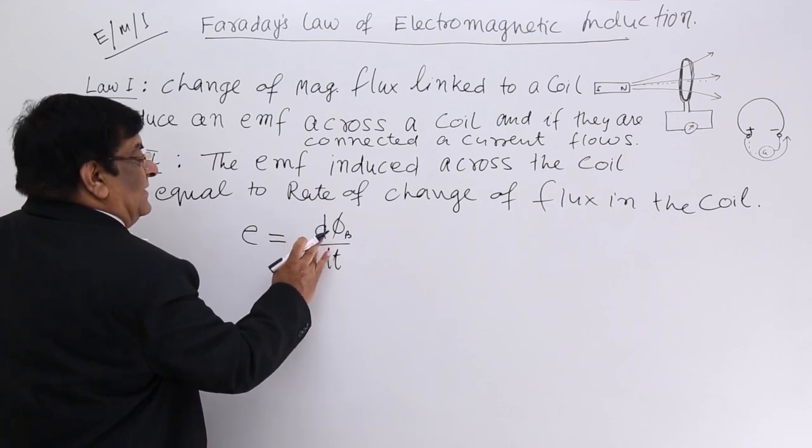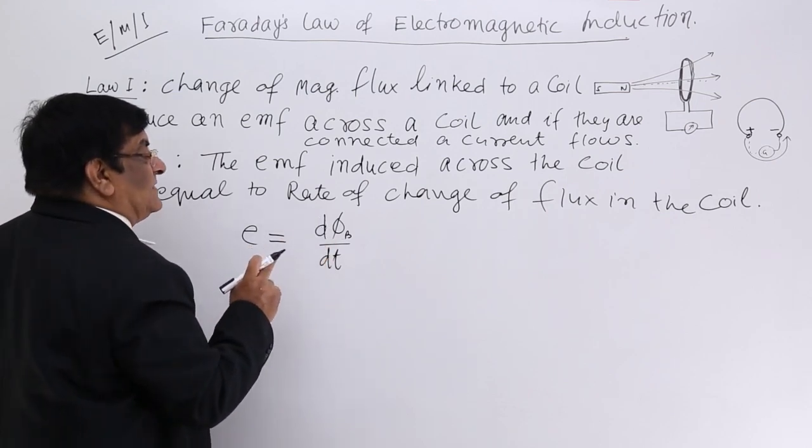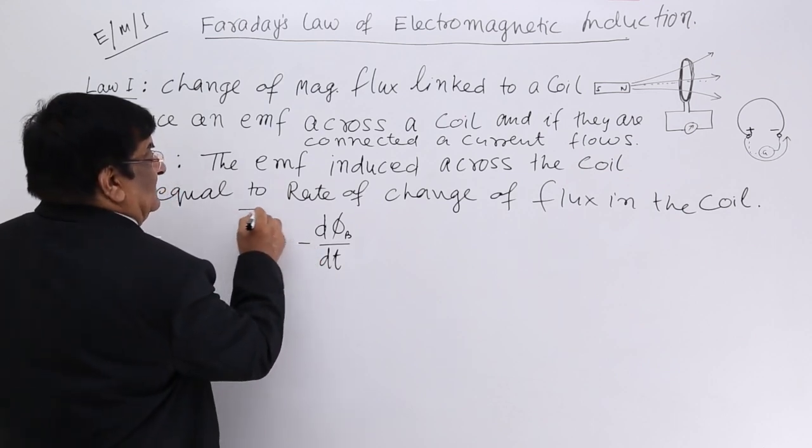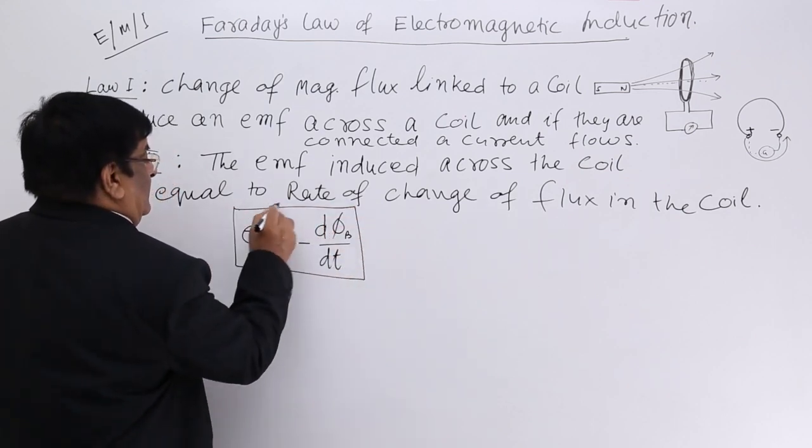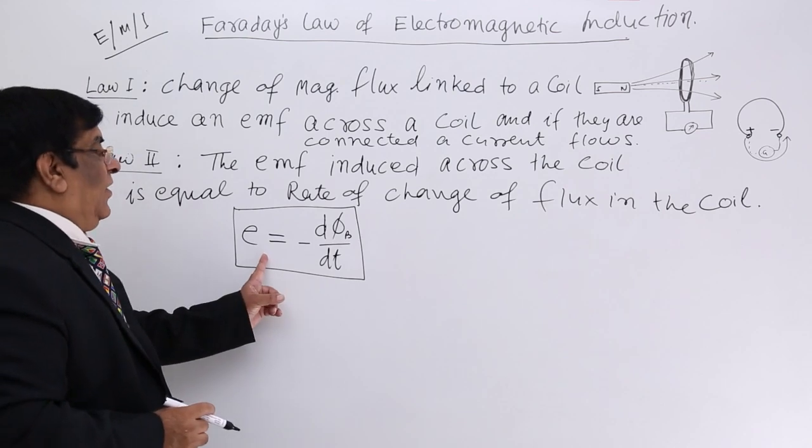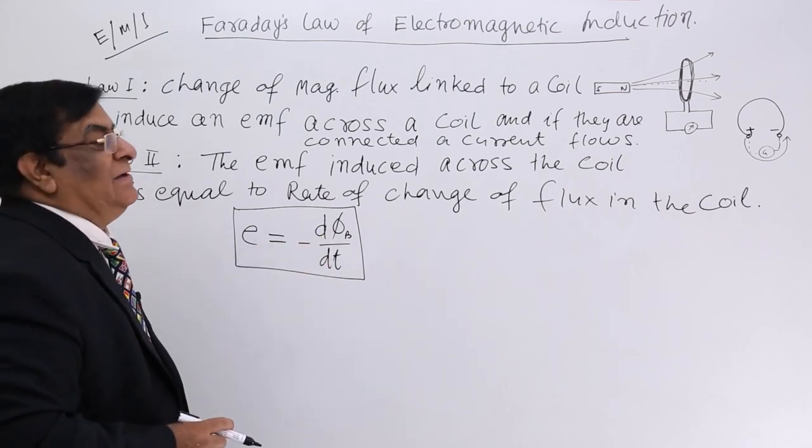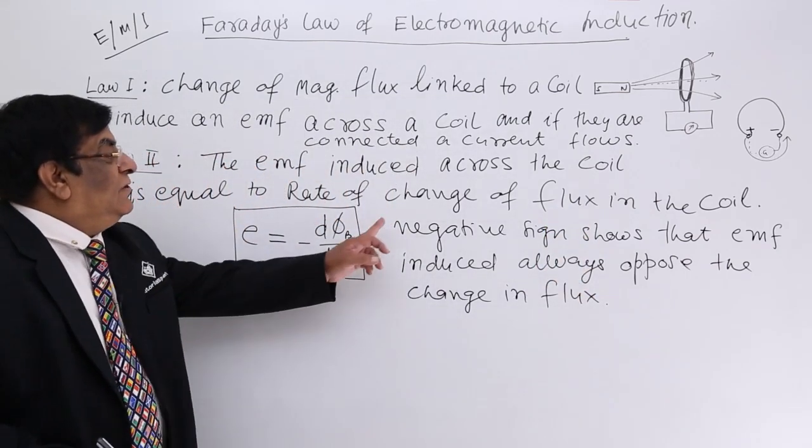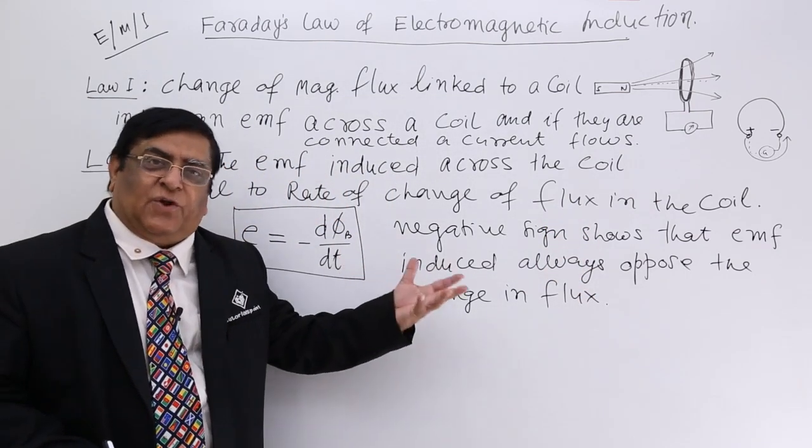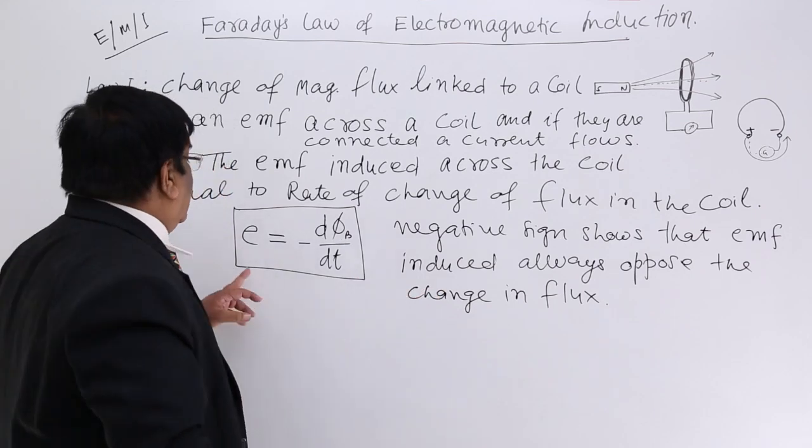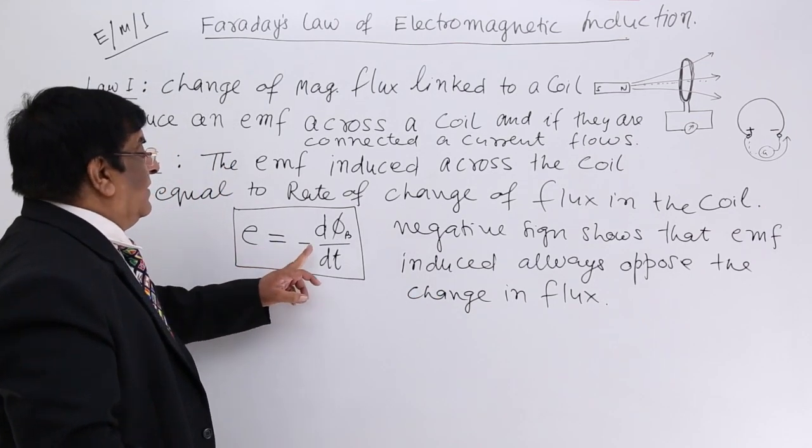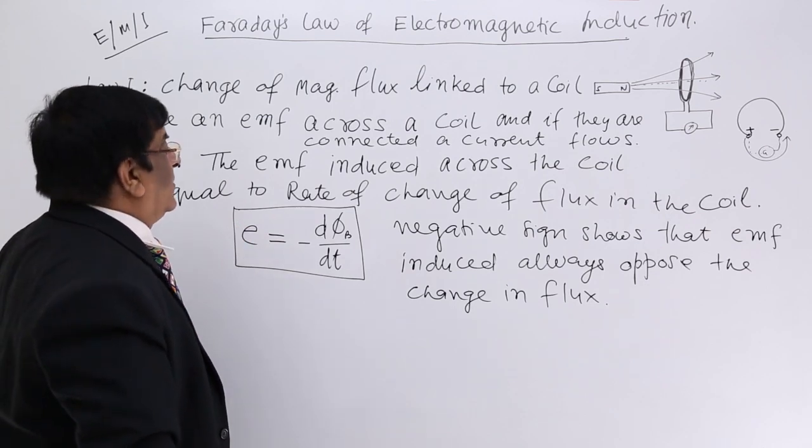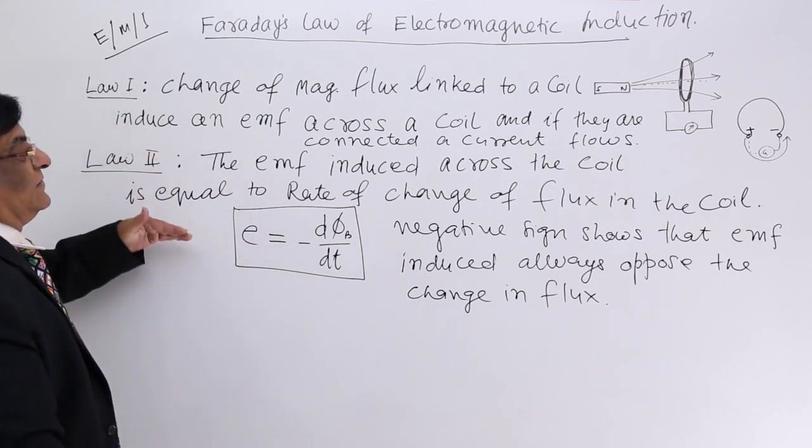But we find that the direction of EMF is opposite to the change of flux, so we put a minus here. So, this is second law: E = -dφ/dt. We will do this in detail in the next law when we study Lenz's law. So, these are the two laws.